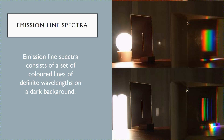So let's look at emission line spectra first. Emission line spectra consists not of a continuous band of colors, but rather a set of colored lines of definite wavelength on a dark background. So you see from the diagram on the right, you have a normal light bulb. And if the light from this light bulb is passed through a slit, what you get is a continuous band — a continuous spectrum.